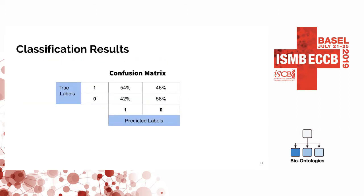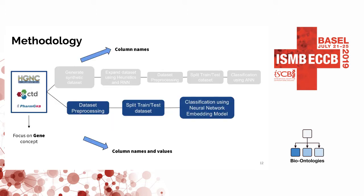However, due to the artificial nature of this method, we only used a very small number of real column names from the data, and the rest was built artificially. If we look at the confusion matrix that was generated, we have really high percentages where the classes are mislabeled — over 40%. So this led to the second method, where we would use both column names and the values in these columns.